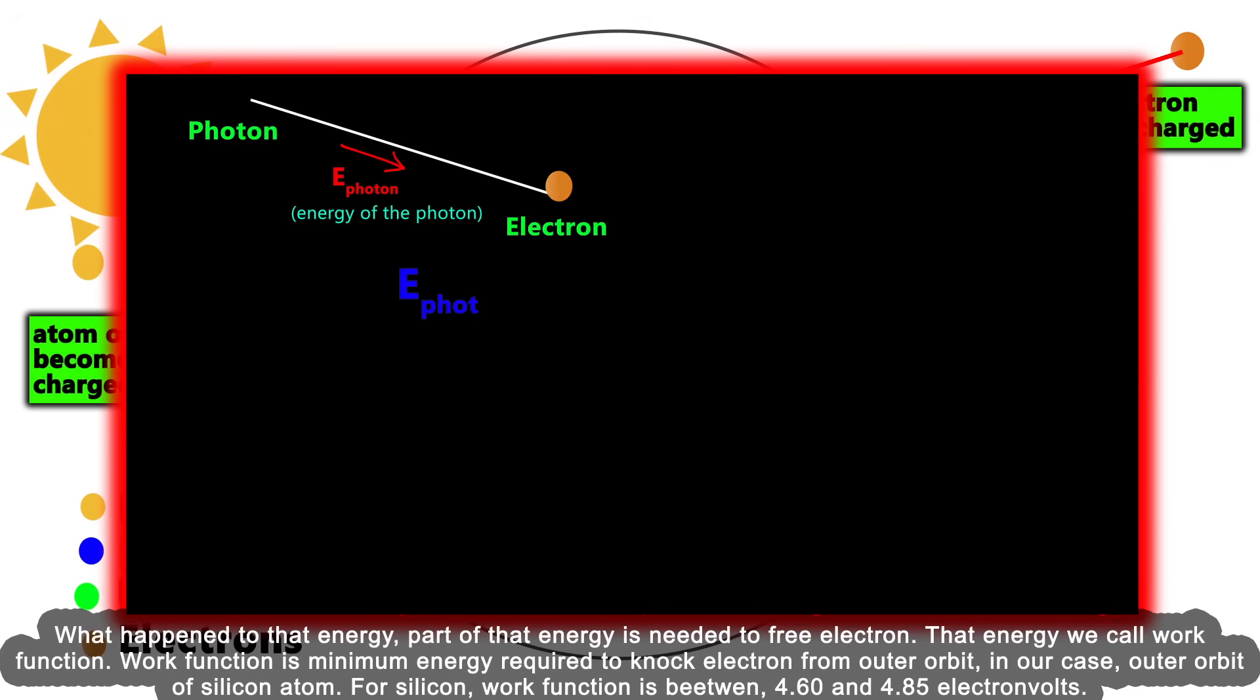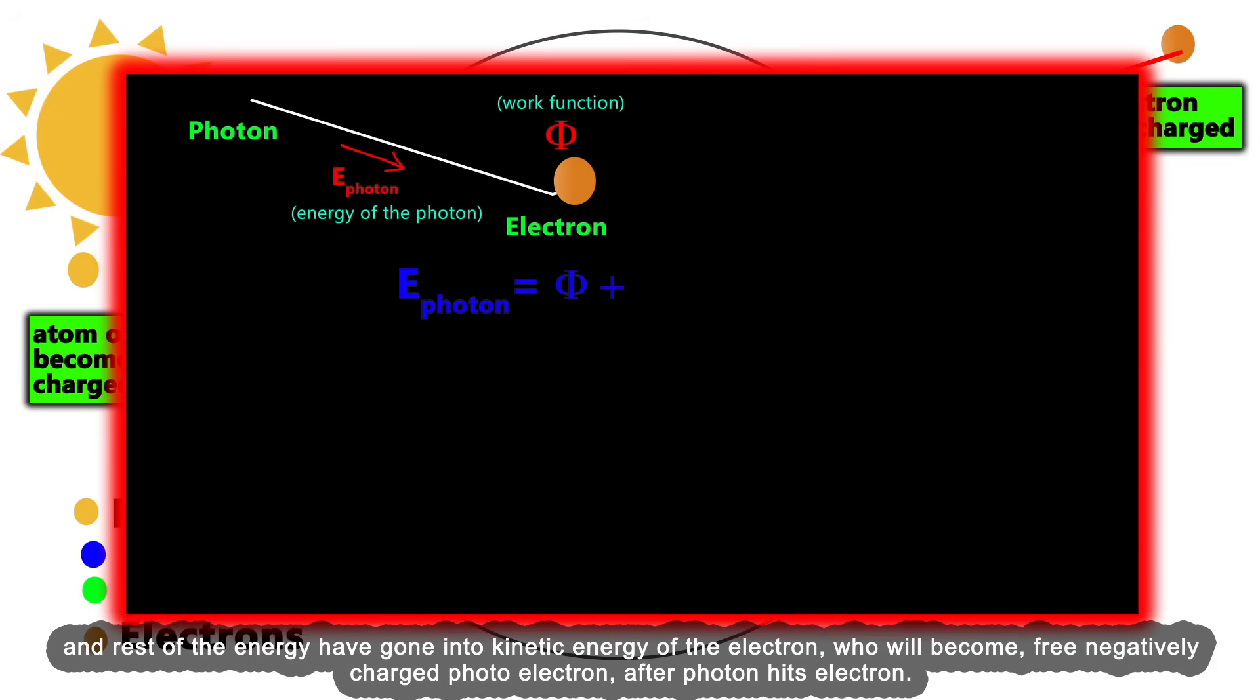In terms of classical physics, when we talk about energy being conserved in this process, part of the photon's energy is needed to free the electron. That energy we call the work function. Work function is the minimum energy required to knock an electron from the outer orbit. For silicon, the work function is between 4.60 and 4.85 electron volts. The rest of the energy goes into kinetic energy of the free photoelectron.